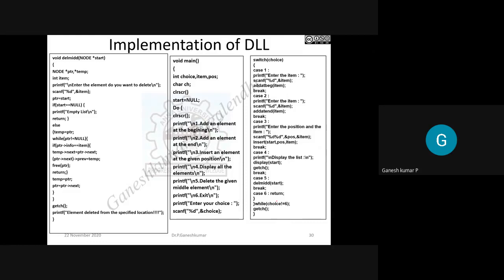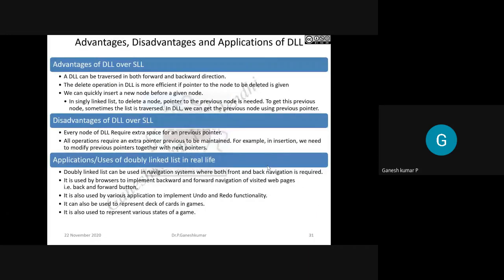For deletion at the middle in DLL, the major difference is you need to think about two address pointers: next and previous. The main program carries several choices — one, two, three, four — and you choose accordingly. The switch case executes the corresponding operation: add at end, add at beginning, insert, and display are called based on the choice selected.